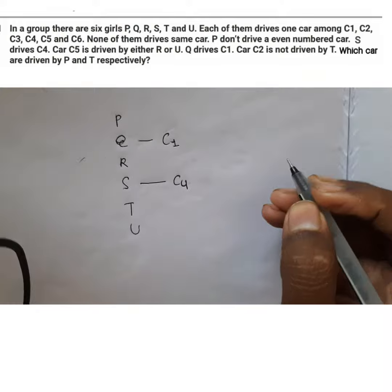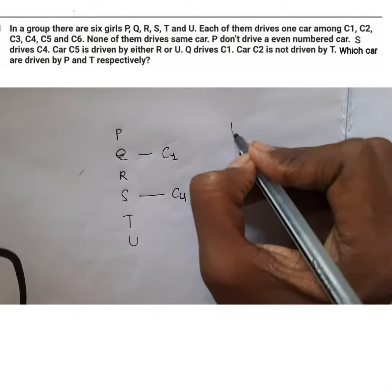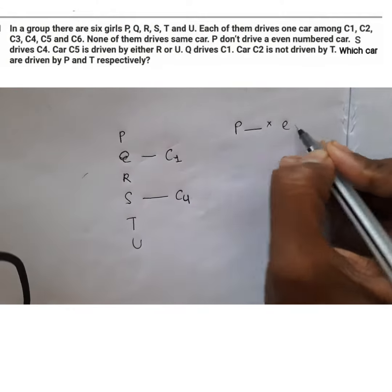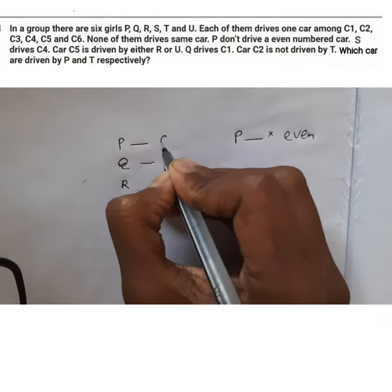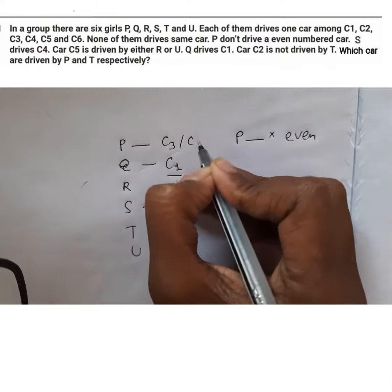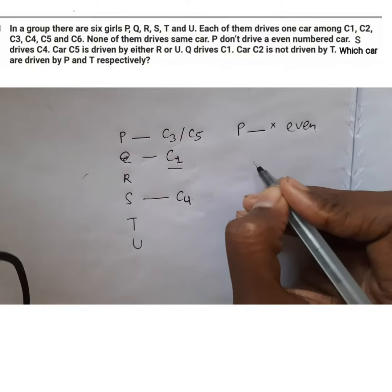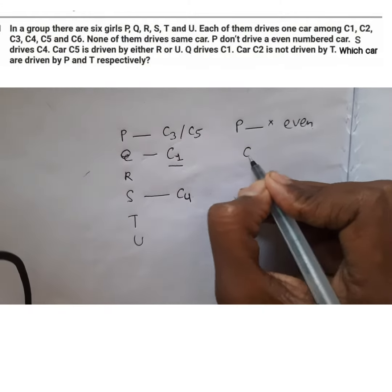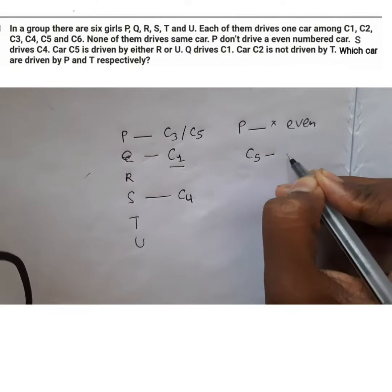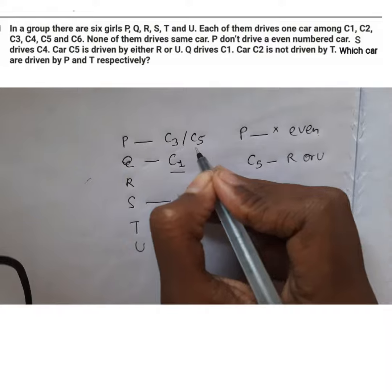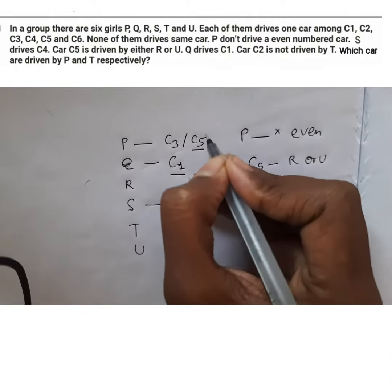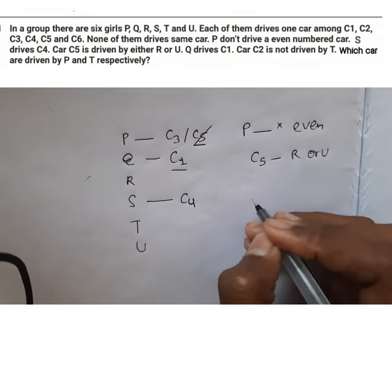Now, we start over. P doesn't drive even. As C1 is taken here, P has only two options, C3 and C5. Now, it is given that C5 is driven by either R or U. Then, P doesn't have this option. So, we cancel it.